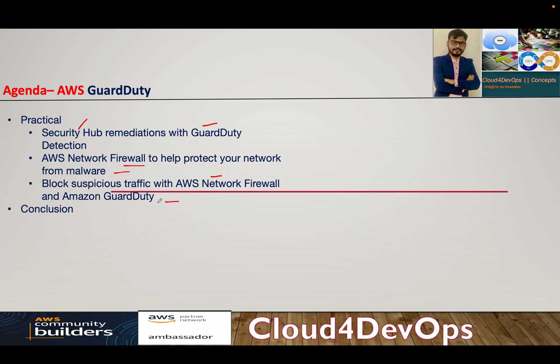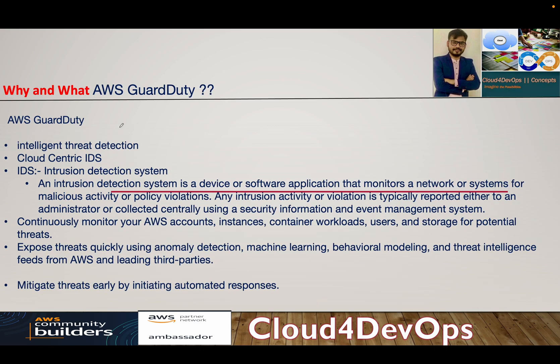Finally, we'll go to the conclusion section. This is not one video for all — this is a series on GuardDuty. So let's start. AWS GuardDuty is an Intelligent Threat Detection System, basically understanding the environment and tracking and detecting all the threats happening in the world of AWS Cloud. They call it a cloud-centric IDS, and what IDS is, is an intrusion detection system.